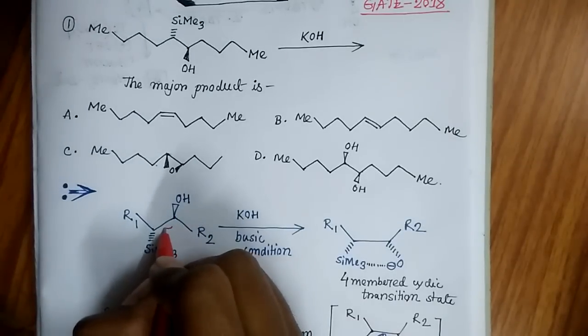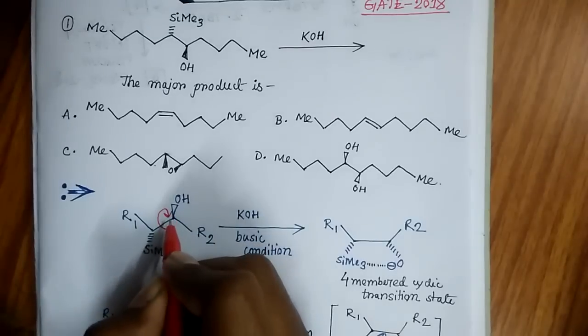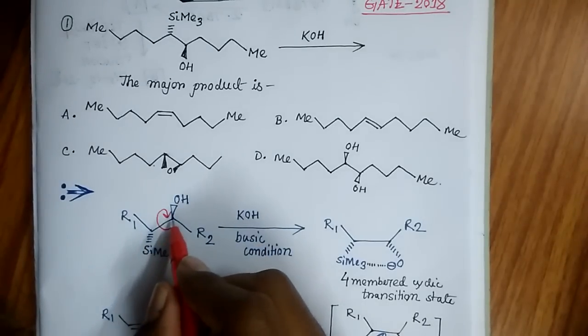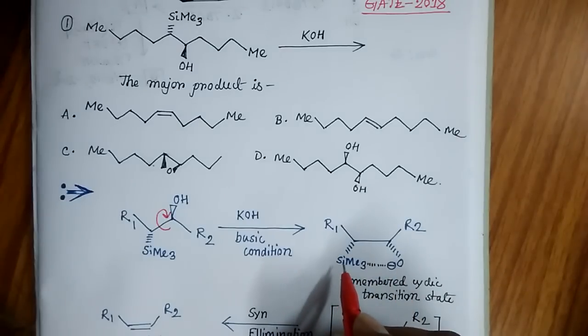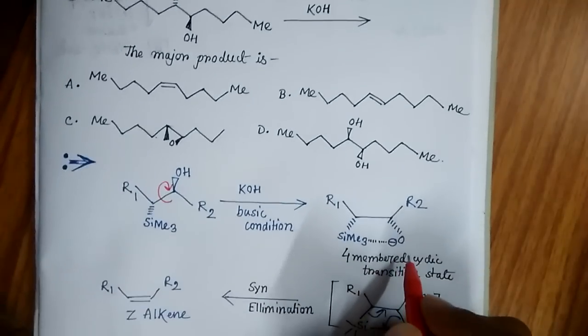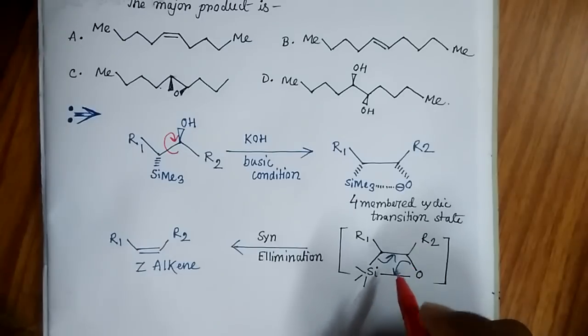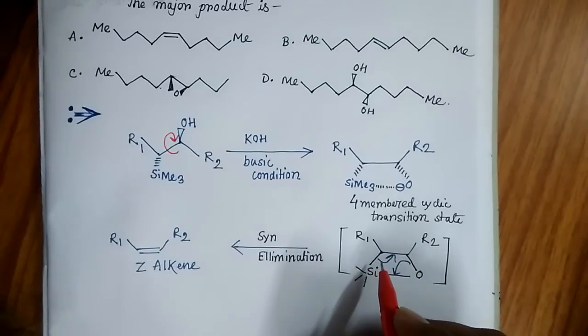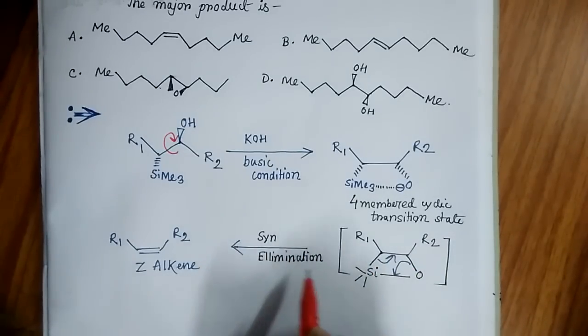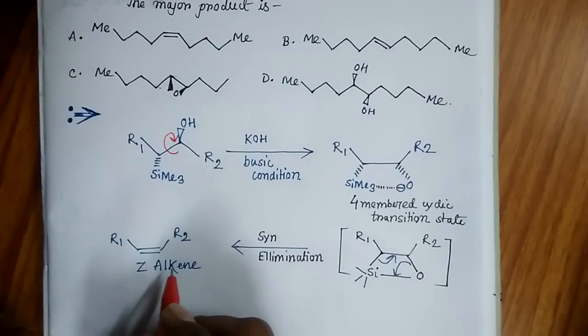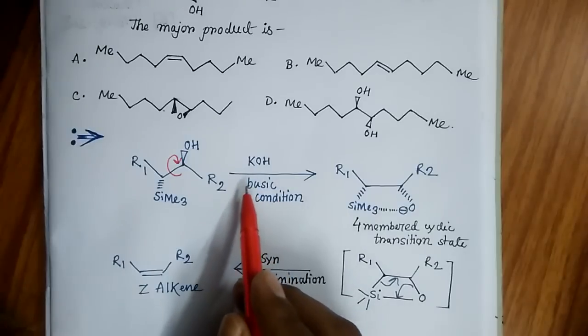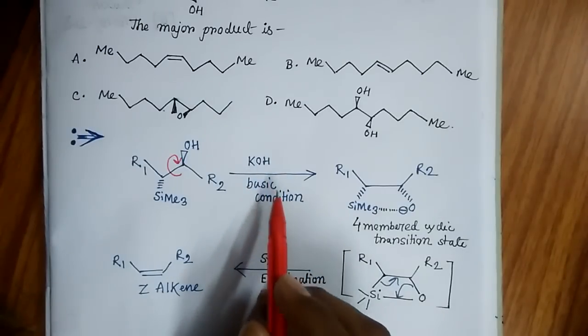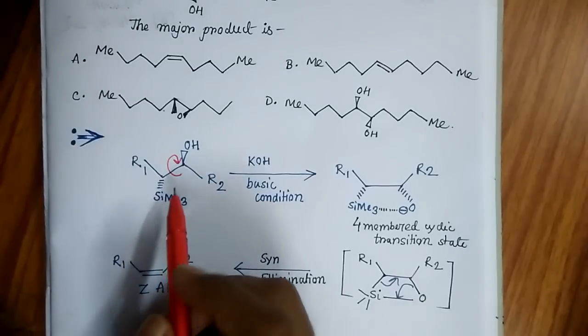As you can see here, the SiMe3 group is below the plane but the OH group is above the plane. So you have to rotate this single bond because carbon-carbon single bond rotation is allowed. The bond is rotated in such a way that oxygen and the SiMe3 group are at the same plane. So here the formation of a four-membered cyclic transition state is taking place which is going through syn elimination, which leads to the product which is a Z alkene.